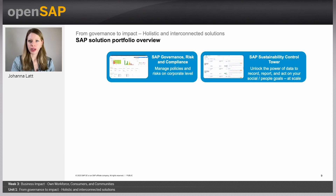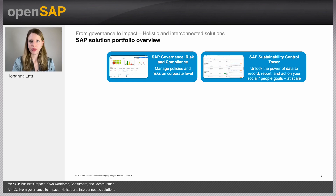We have two solutions currently helping manage human rights due diligence on corporate level. SAP Governance, Risk and Compliance solutions help manage policies and financial risks on corporate level. SAP's Sustainability Control Tower helps unlock the power of your ESG data to record, report, and act on it at scale across your company. Here you can gather insights from all your different lines of businesses, measure your progress, and act on your social and people goals across your whole organization.